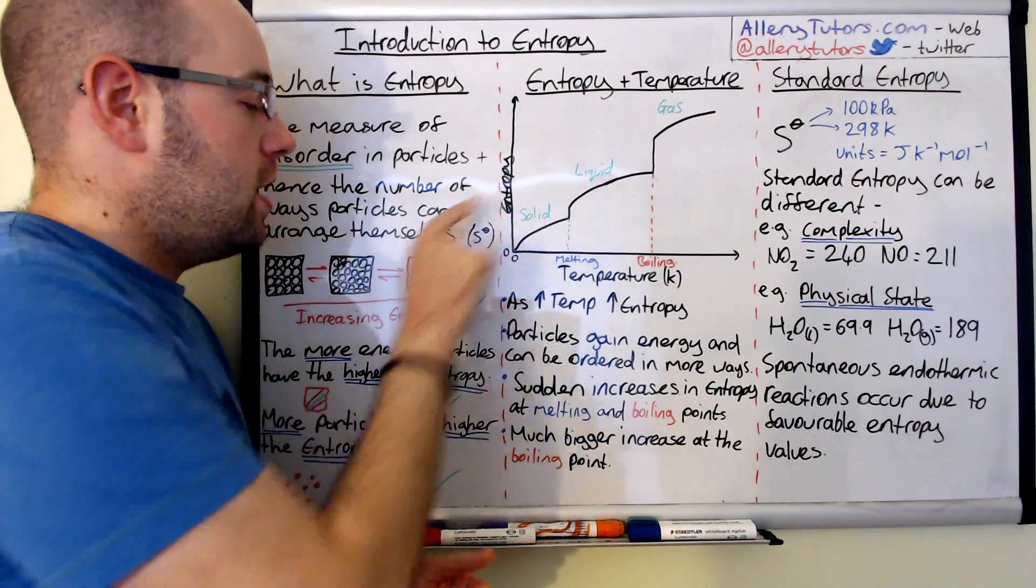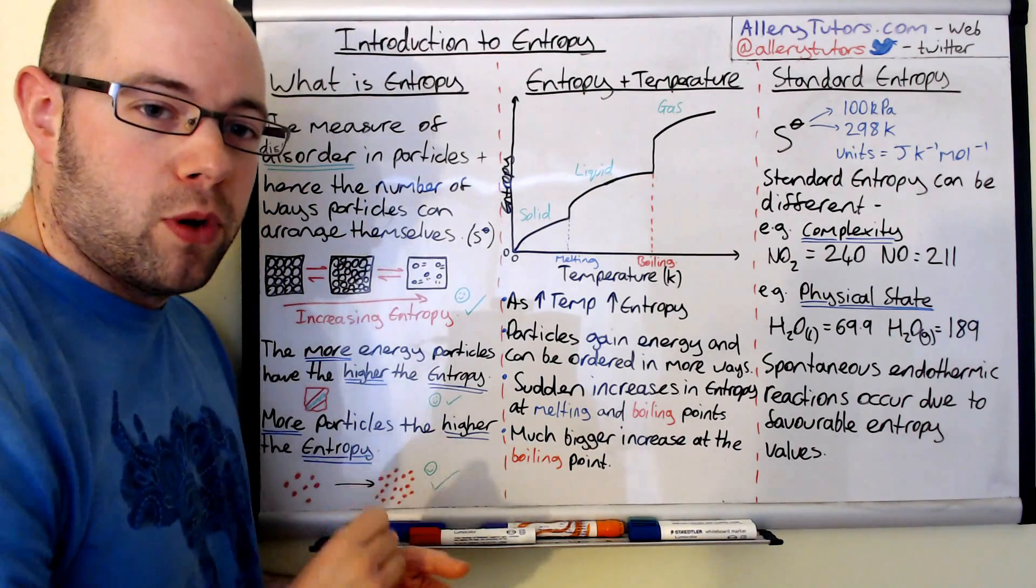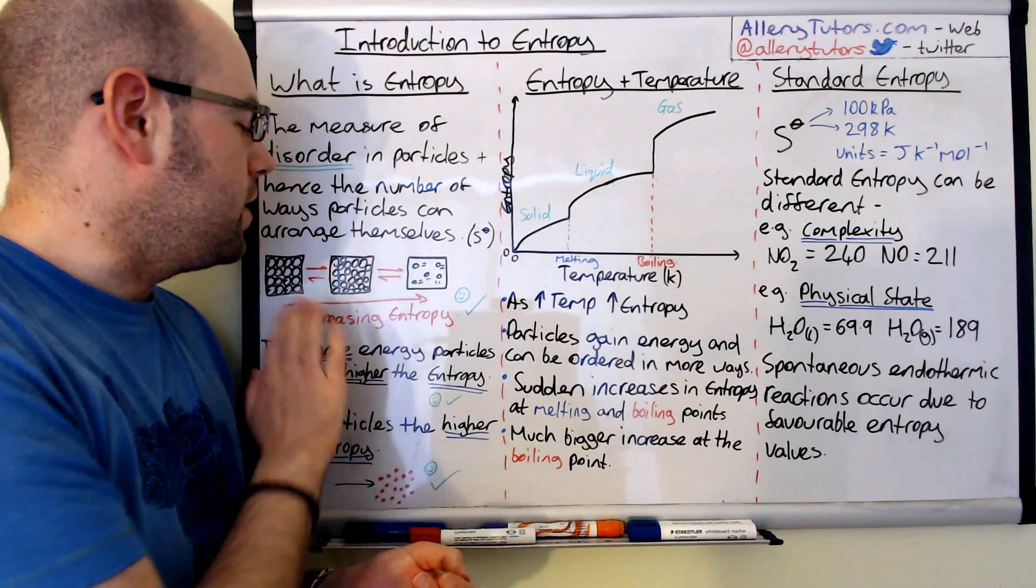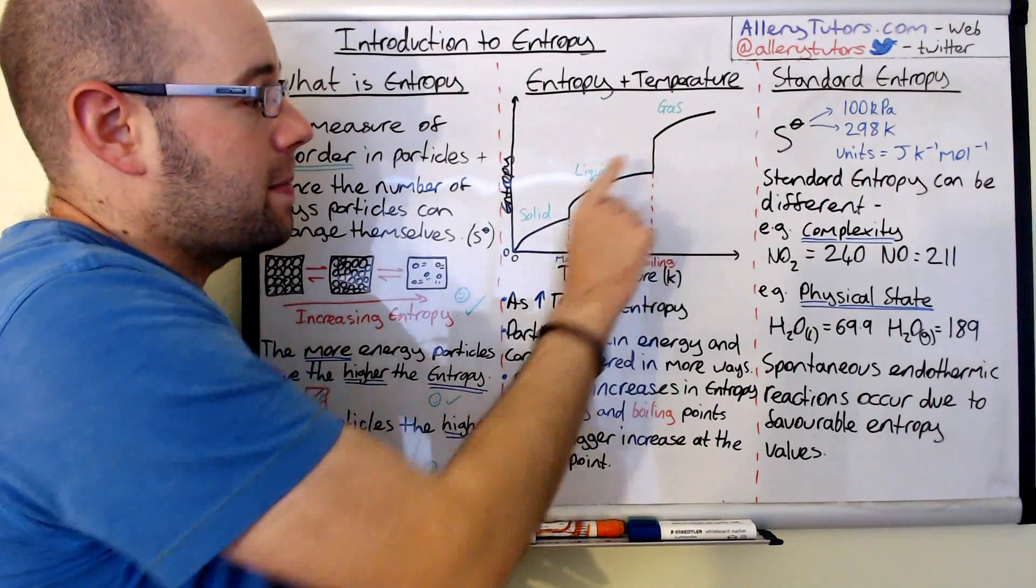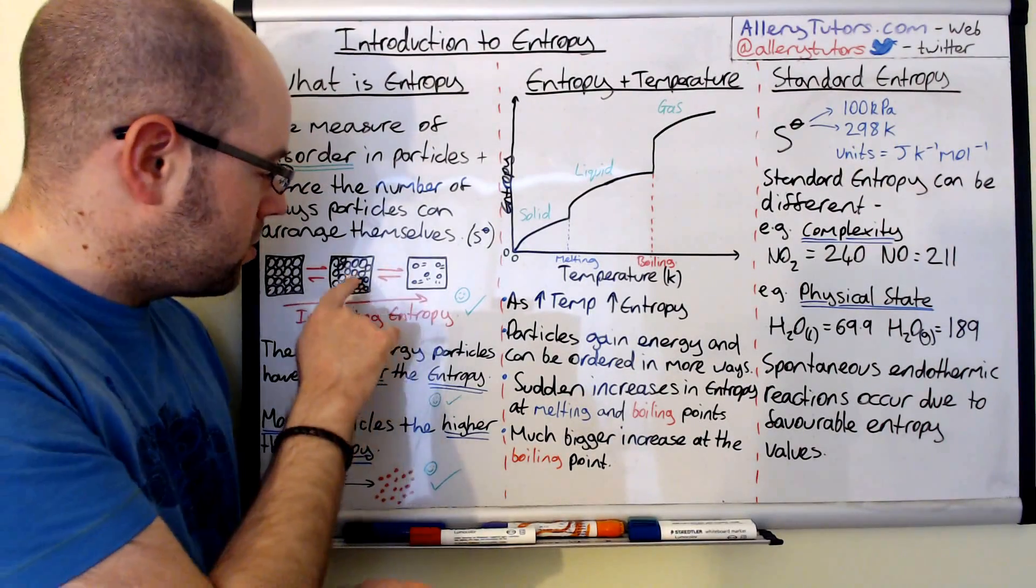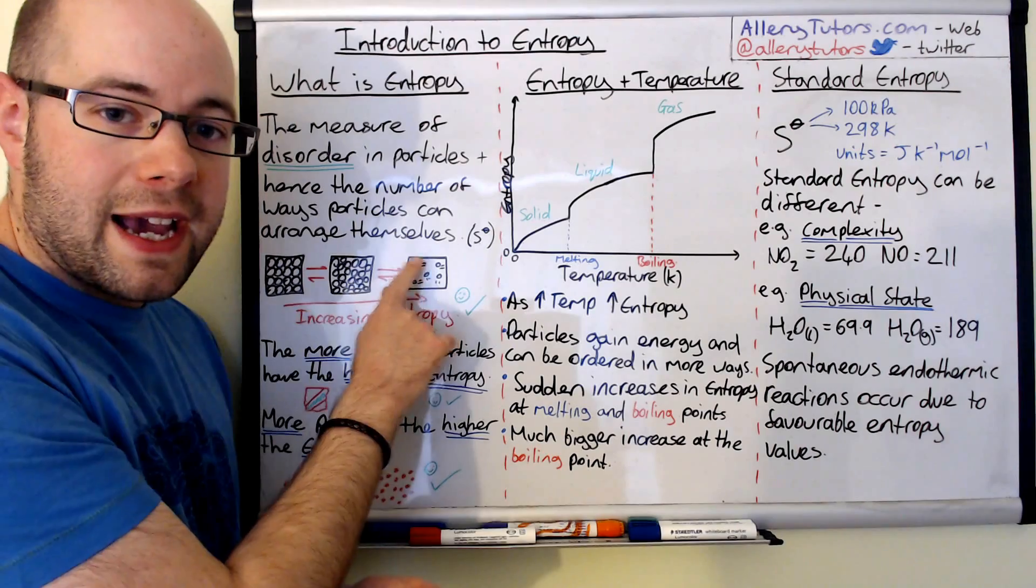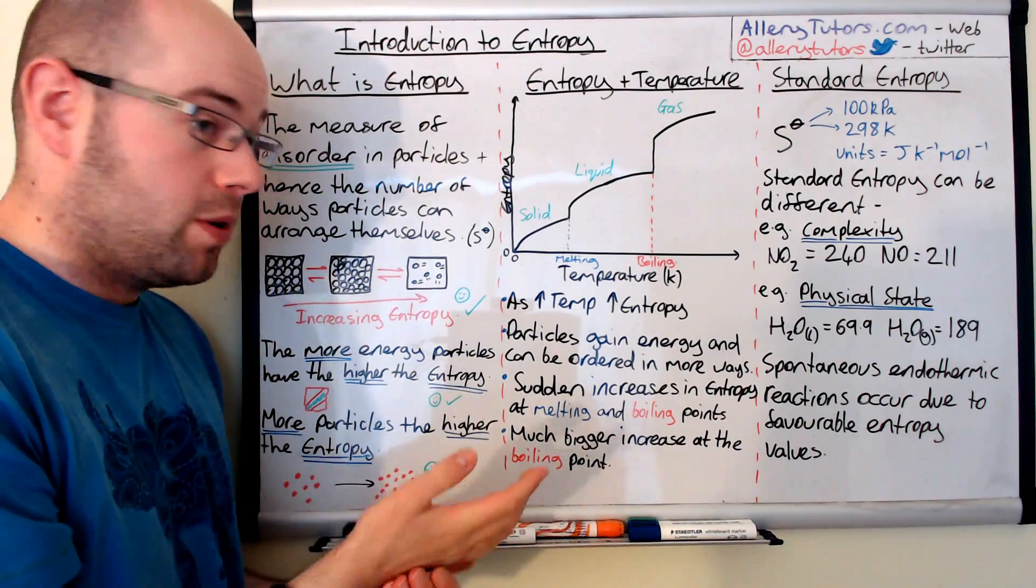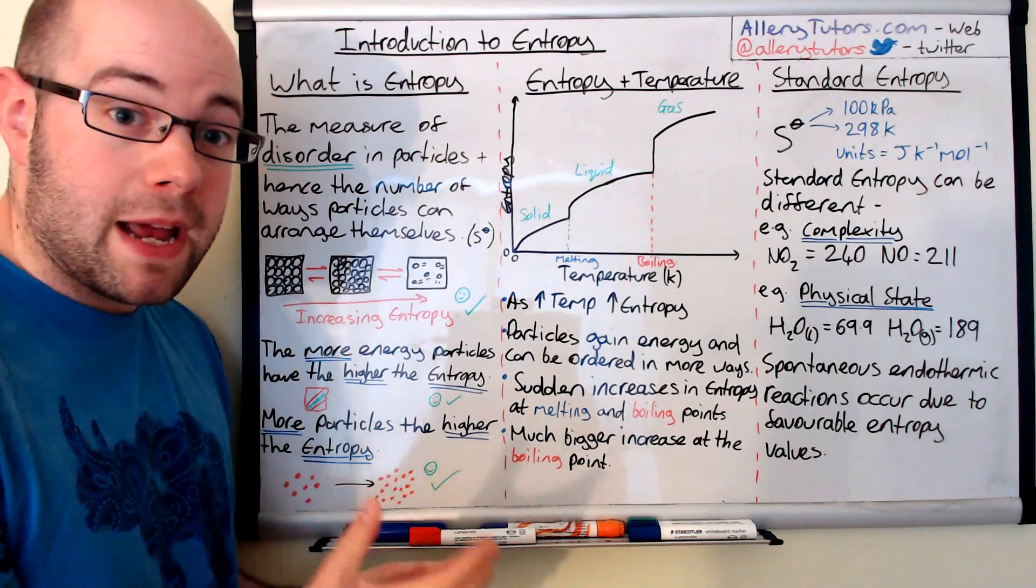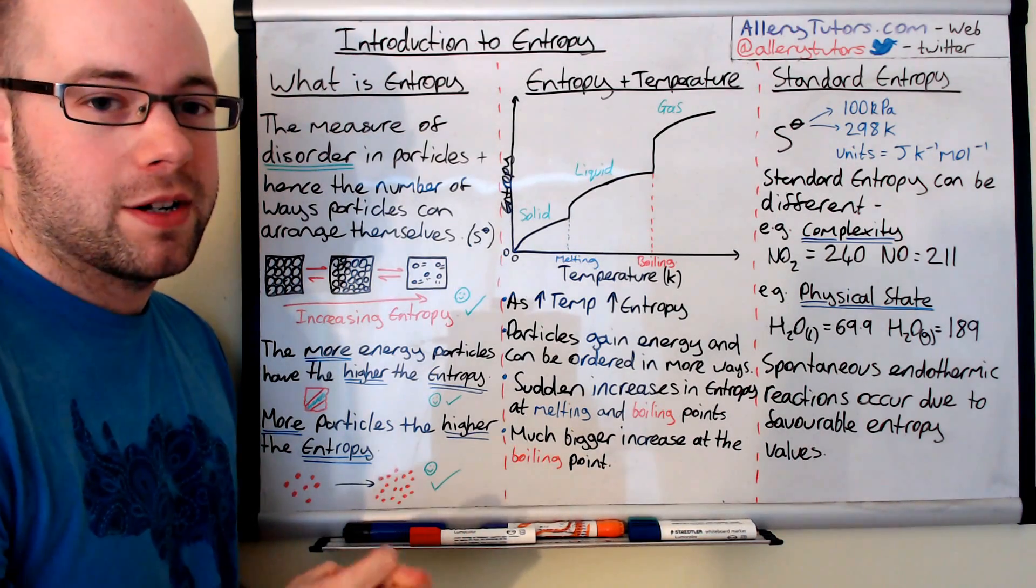Then we go into the liquid, and again the particles get more and more energy, little packets of energy, and they start to move around that little bit more until we get to this step here, which is the boiling point. This is going from the liquid to a gas, an entropically favorable process because we have many more ways in which we can arrange the particles.